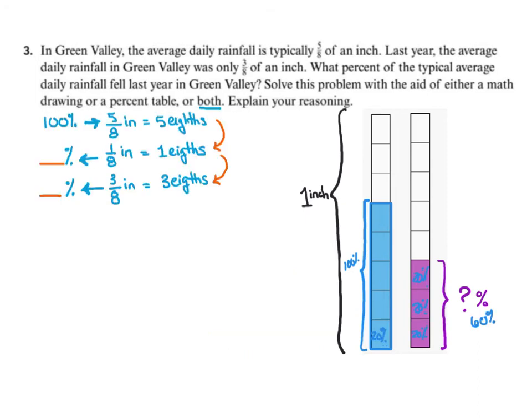So if we want to use a percent table to solve this problem, we're going to first need to look at that we have 100% is the 5 eighths of an inch. And we're looking to figure out what percentage corresponds with 3 eighths of an inch. So in order to find that, we want to first figure out what 1 eighth of an inch would represent, and then we can go up to 3 eighths.